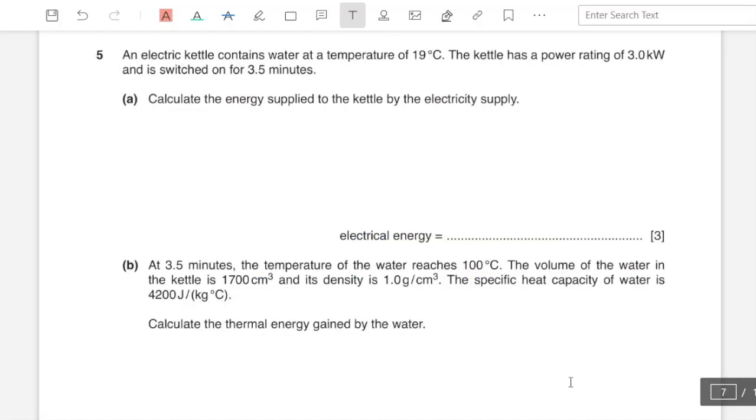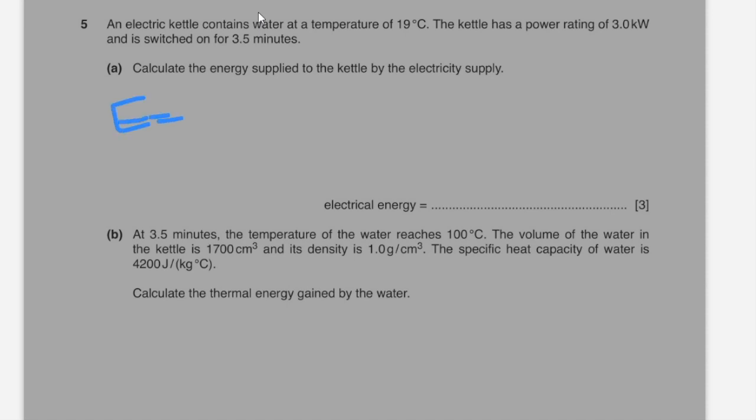Question number five: an electric kettle contains water at temperature 19 degrees Celsius. The kettle has a power rating of 3 kilowatts and it is switched on for 3.5 minutes. Part a: calculate the energy supplied to the kettle by the electric supply. Energy equals power into time. Power given is 3000 watts into time, I will convert 3.5 minutes into seconds. This gives the answer as 6.3 into 10 to the power of 5 joules of electrical energy.